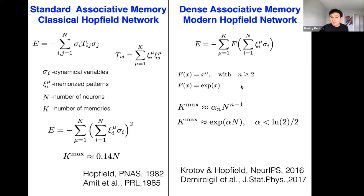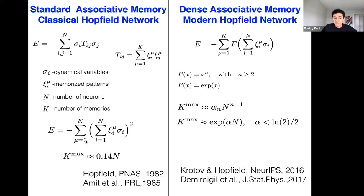If one picks that function in a smart way, it is possible to achieve superlinear memory storage capacity. We can turn the linear scaling relationship between the maximum number of retrievable memories and the number of neurons into a superlinear one. The computation is very similar to what was done by Hopfield or in the famous paper by Amit, Gutfreund, and Sompolinsky in the 80s. Essentially you consider an ensemble of random memories xi, with each xi_mu drawn from ±1 with equal probability, then average over that ensemble.